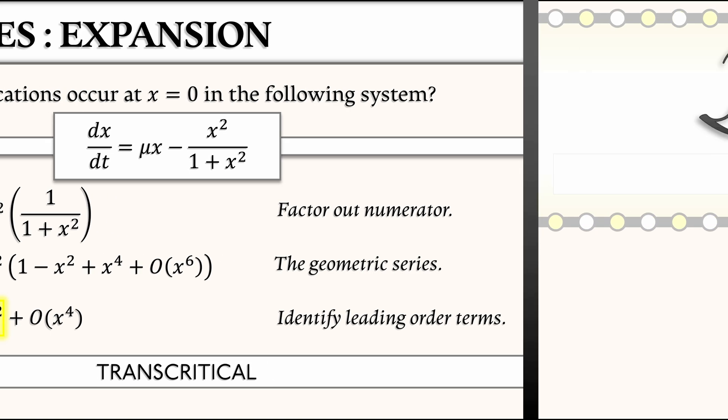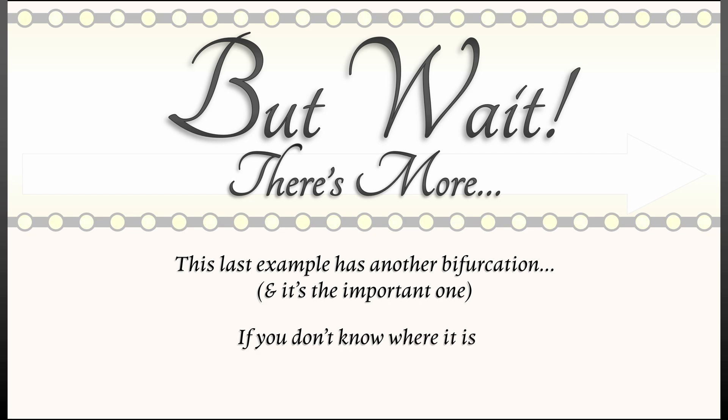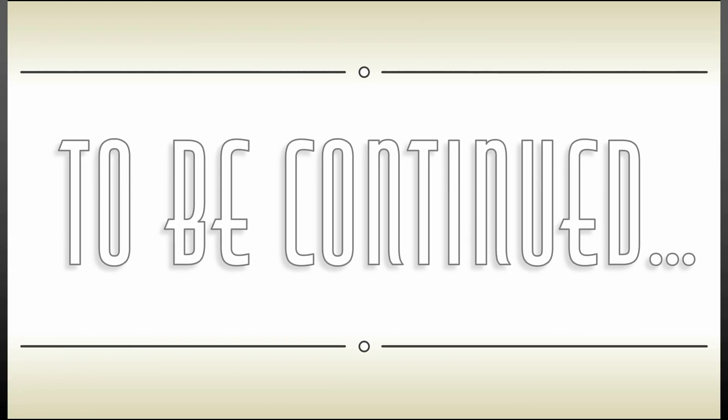Now, here's the thing. That last example has a transcritical bifurcation at x equals zero, mu equals zero. But there's another bifurcation as well. And it's the important one. And where is it? If you don't know where to look, how are you going to Taylor expand about an unknown point? How are we going to find and classify that bifurcation? This is a story that is to be continued.